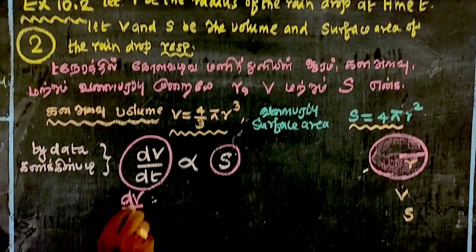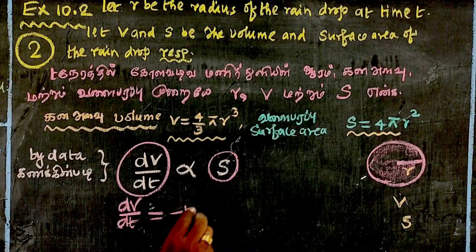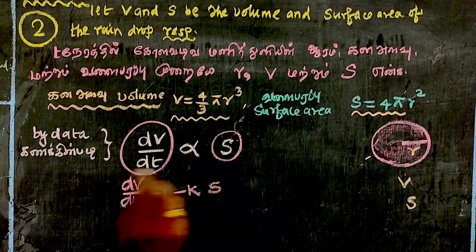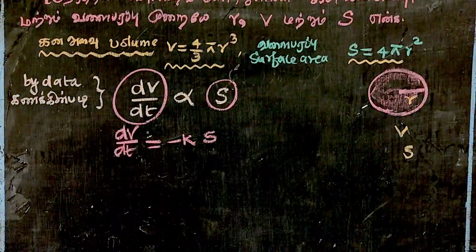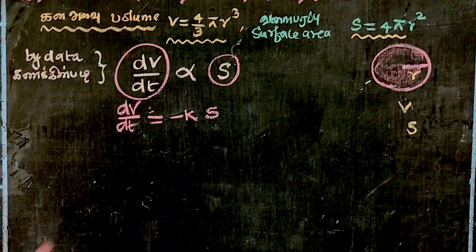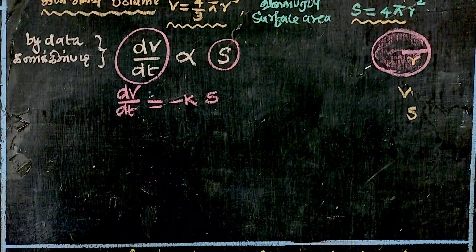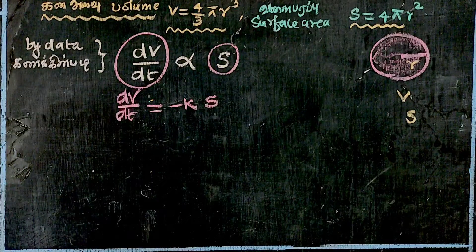dV/dt is equal to minus kS, where k is the constant of proportionality. We use minus k because the volume is decreasing, so automatically it's negative.